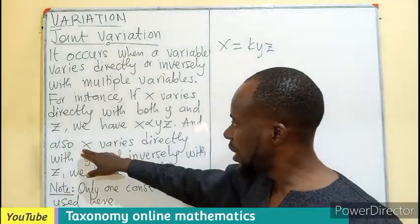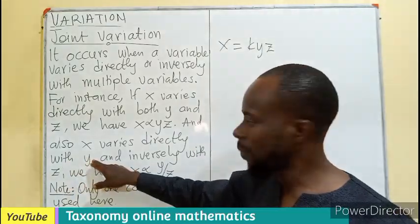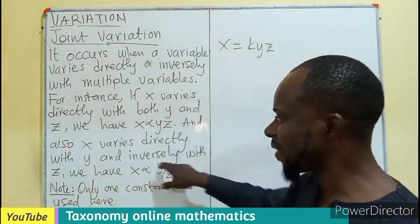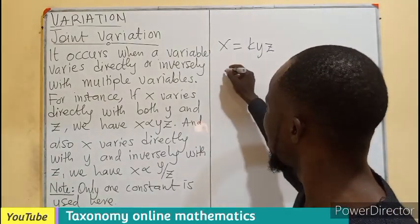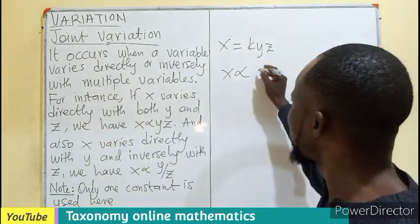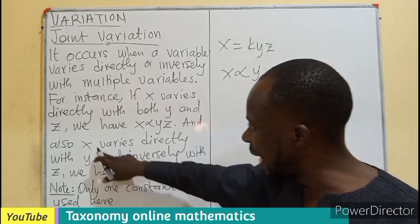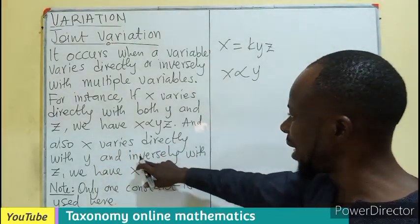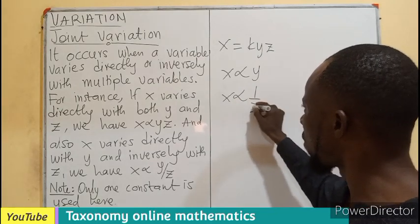Then also, if X varies directly with Y and inversely with Z, first of all, we are going to have X varying directly as Y. Then the same X is varying inversely, so X varies as the inverse of Z.